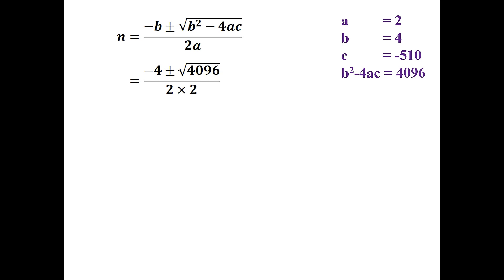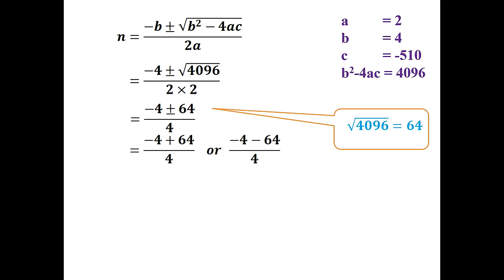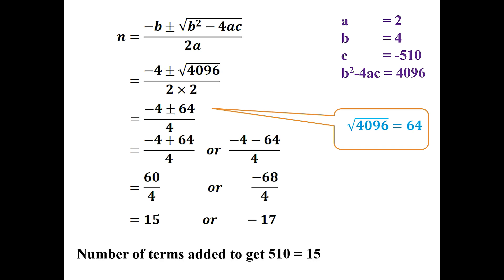Using the quadratic formula: n = (−4 ± √4096) / (2 × 2) = (−4 ± 64) / 4. This gives n = (−4 + 64)/4 = 60/4 = 15, or n = (−4 − 64)/4 = −68/4 = −17. Since the number of terms cannot be negative, n = 15. Therefore 15 terms must be added to get a sum of 510.